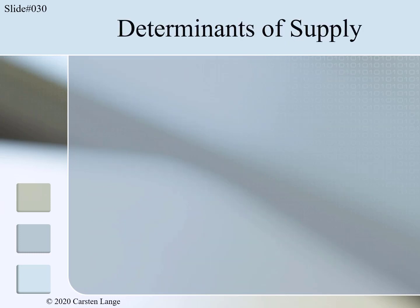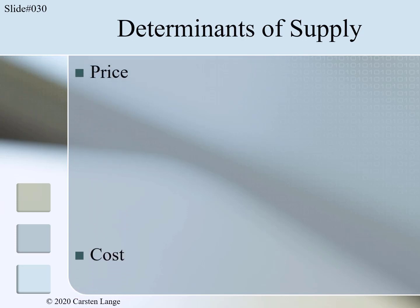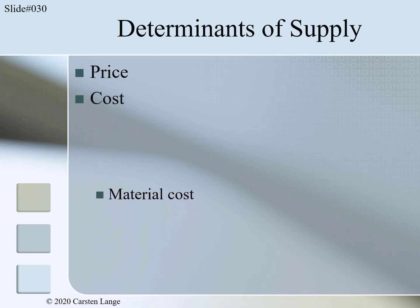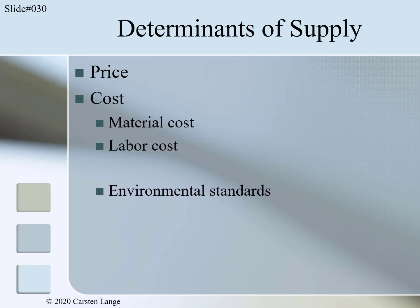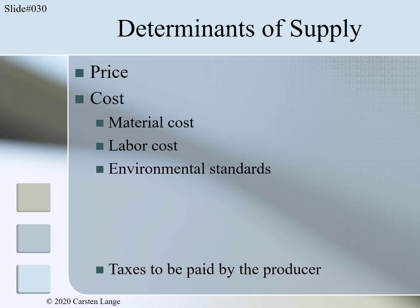Let us first review important determinants of supply. We already showed in the previous segment of this module that the price is the most important determinant of supply. But other economic variables, most of them cost-related, also influence the supply — material cost, labor cost, environmental standards, and so on. We start with the price.